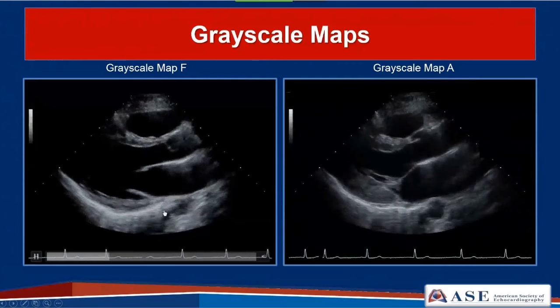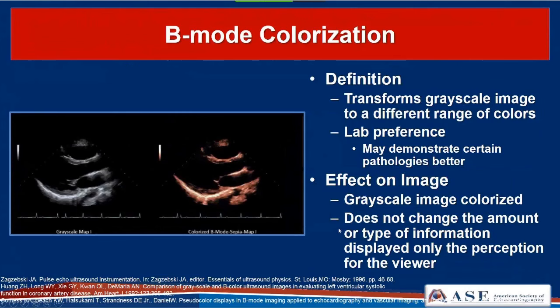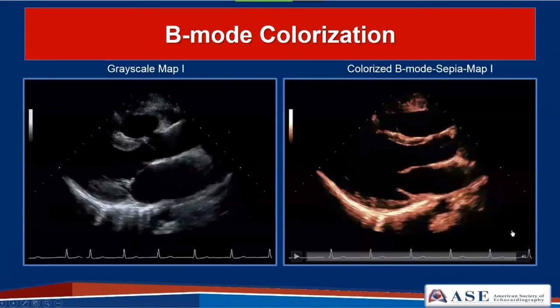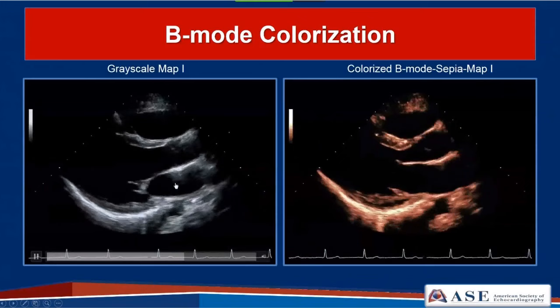B-mode colorization is another tool that transforms the grayscale image to a different range of colors, really based on lab preference. It may demonstrate certain pathologies better and certain interpreting physicians may prefer it for seeing specific pathologies. It does not change the amount or type of information displayed—only the perception for the viewer. For example, colorizing map I to sepia still uses the same map I, just in a different color range.